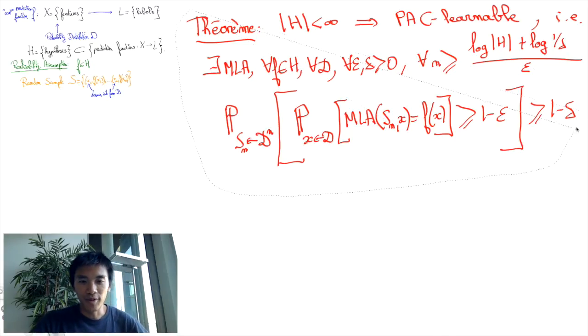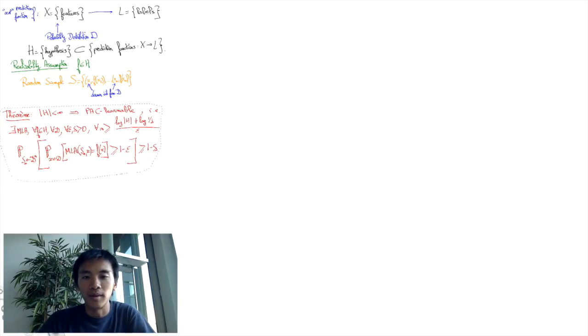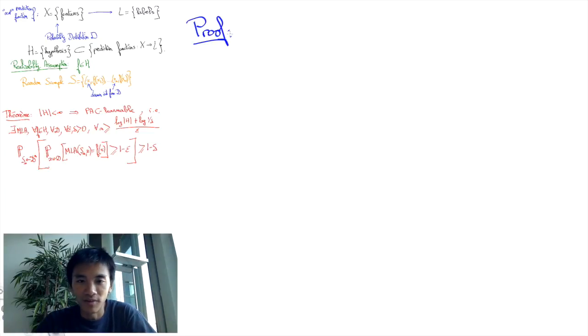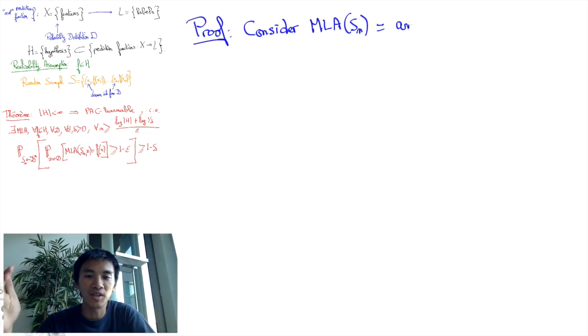Let's now prove the theorem. The machine learning algorithm needn't actually be some complicated algorithm. It might just be a memorization algorithm that only spits out predictions for features that it has observed in the sample set, and it could just say I don't know for other features. However, we shall not consider this machine learning algorithm for the sake of exposition.